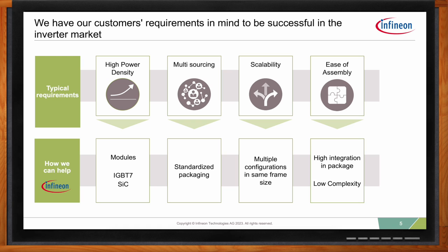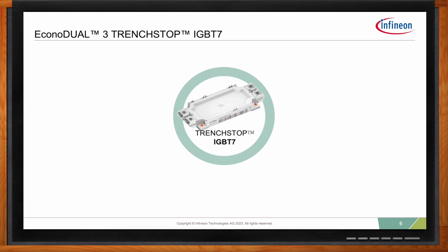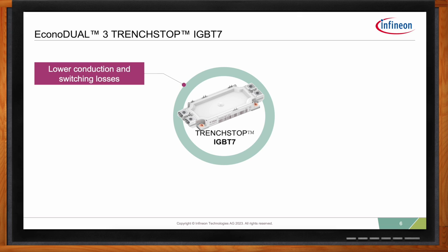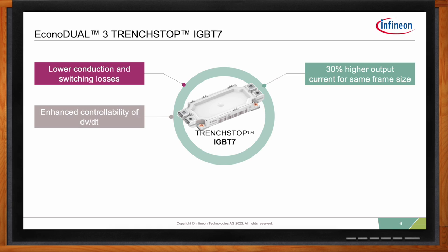Can you give some details about the Econo family and the IGBT 7 solution you mentioned? The EconoDual 3 module uses our latest IGBT 7 chipset, which reduces conduction and switching losses compared to an IGBT 4 chipset. In the same package, we can increase output current by about 30 percent. We also have enhanced controllability of dV/dt with this package.